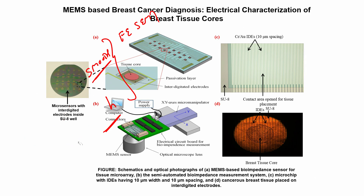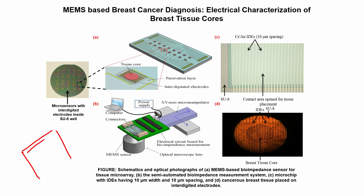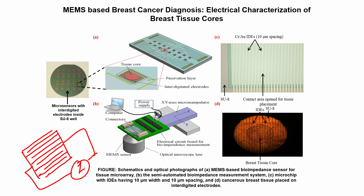For this, we have fabricated micro interdigital electrodes — electrodes in an interdigitated format as you can see on screen. These interdigital electrodes are not touching each other, so ideally the impedance between them should be infinite. If I place a tissue on these interdigital electrodes, there should be a change in the impedance or resistance value.